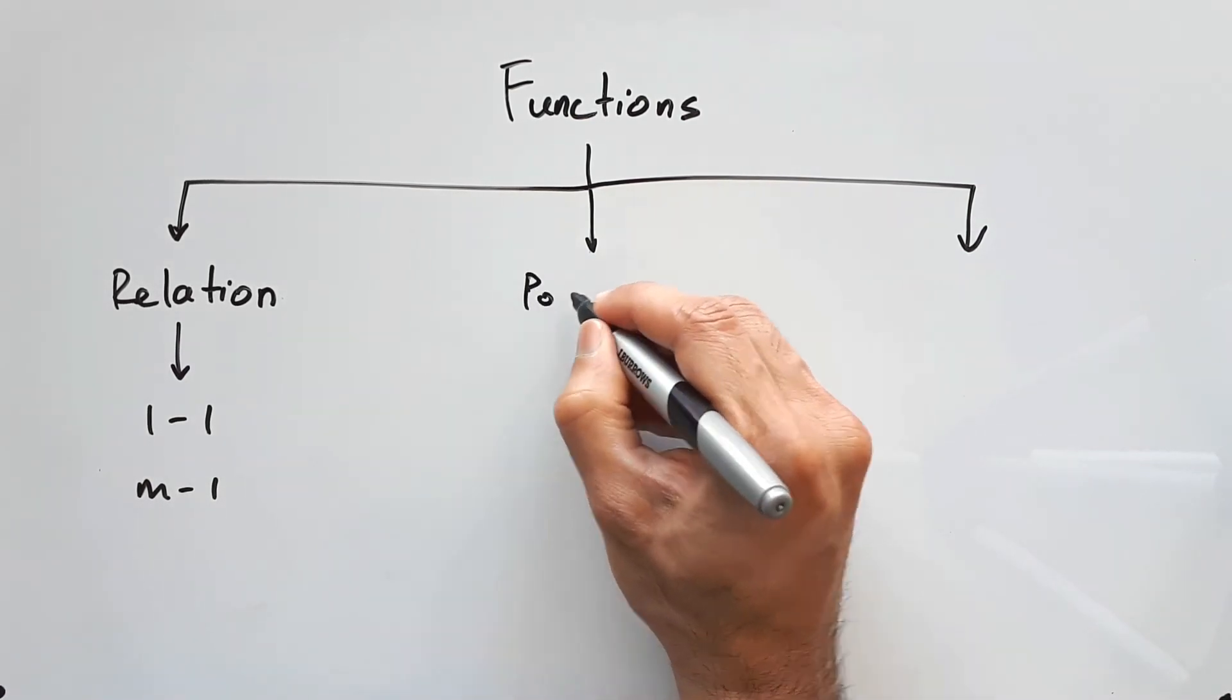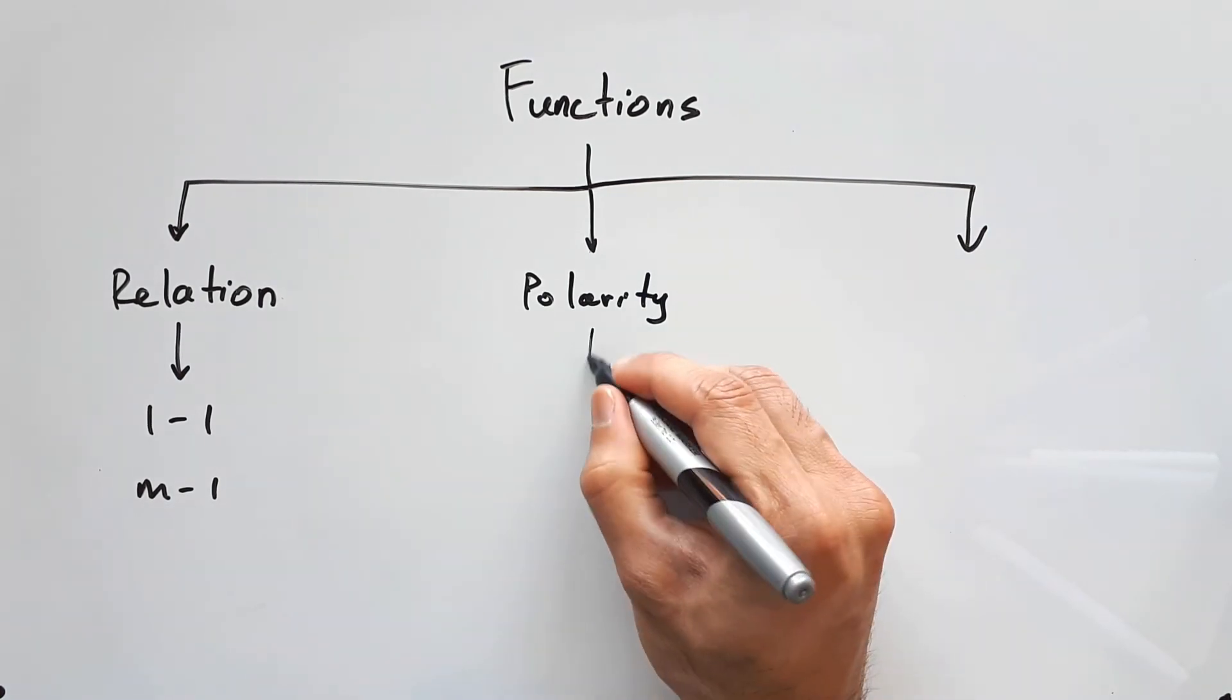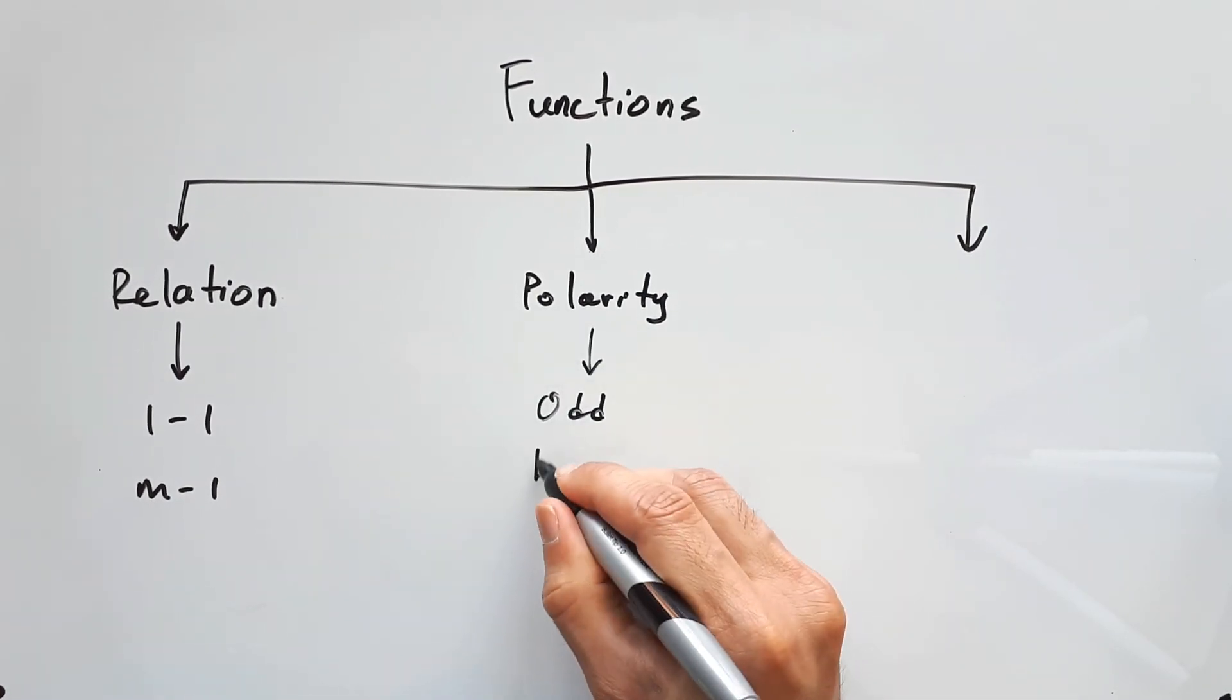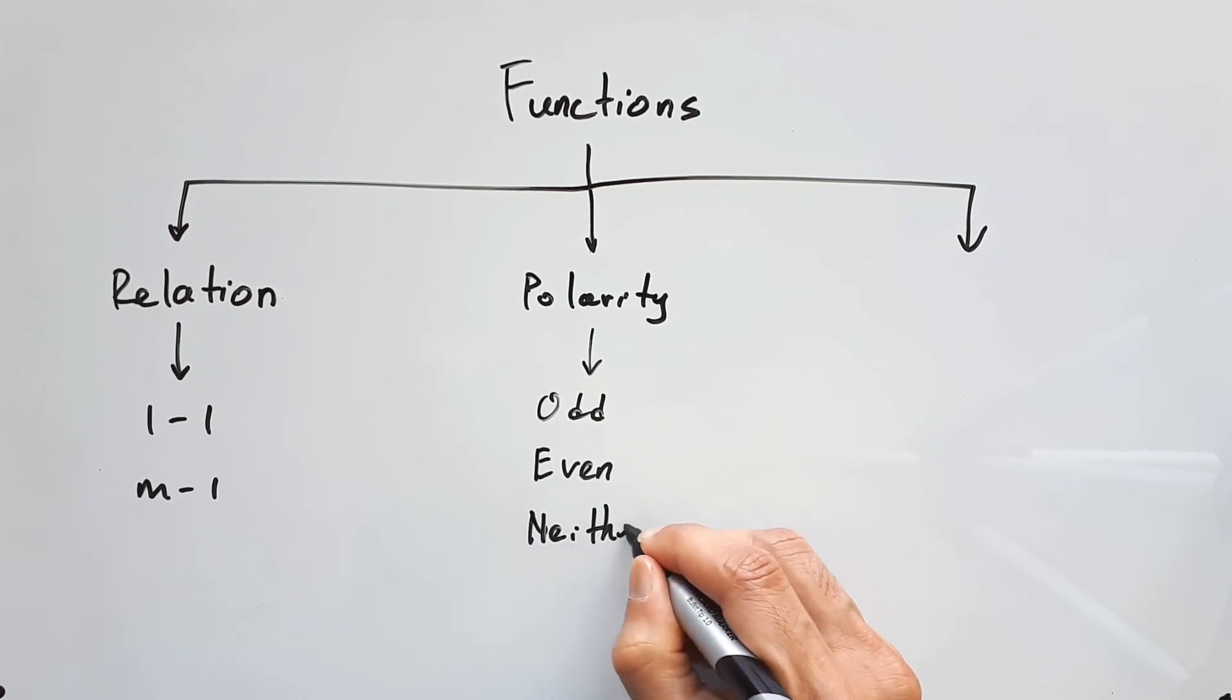You can also describe functions in terms of its polarity. Most functions are going to either be odd, even, or if they don't classify under either one, then we'll just say it's neither.